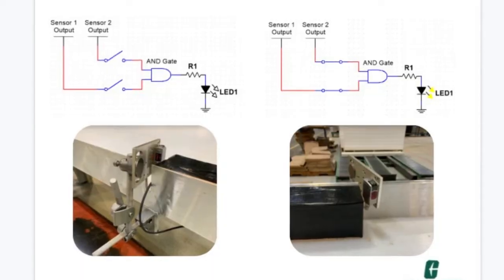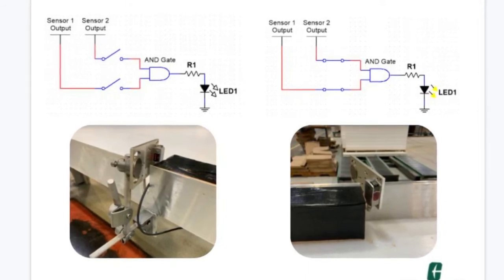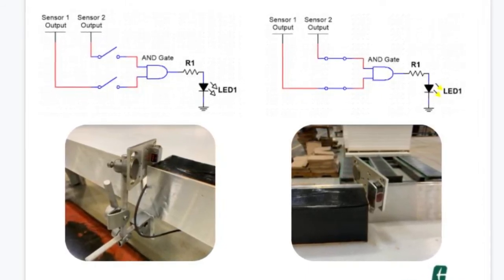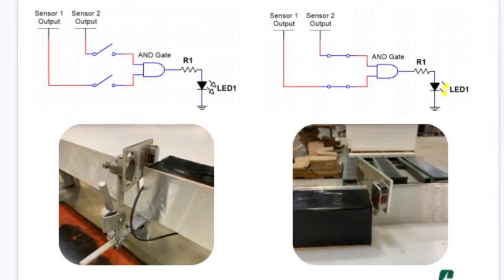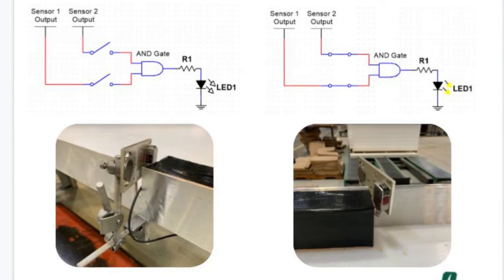To prevent the table from overflowing and reduce risk of operator injury, a sensor which detects the presence of a completed stack was attached to the table. This sensor stops the conveyor when a stack is detected and prevents the line from moving until the operator has removed the stack and made room for the next door.